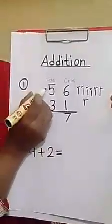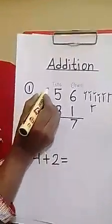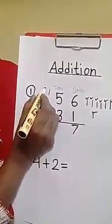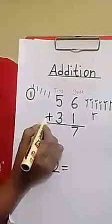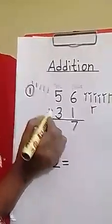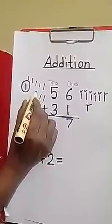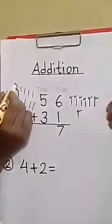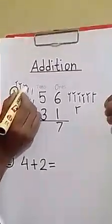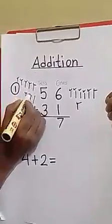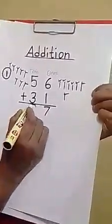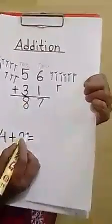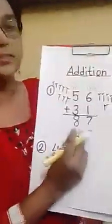Next one, 10's row. There is 5. We will draw 5 sticks. 1, 2, 3, 4, 5. And there is plus 3. We will draw more 3 sticks. 1, 2, 3, 4, 5, 6, 7, 8. So, 5 plus 3 equal to 8. We got the answer 87.